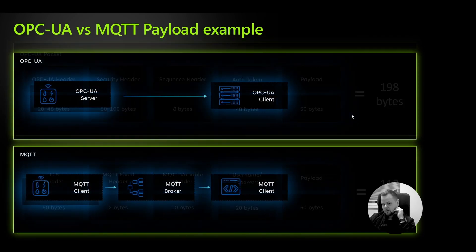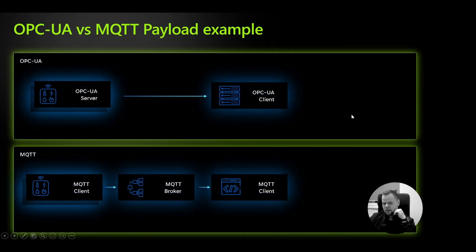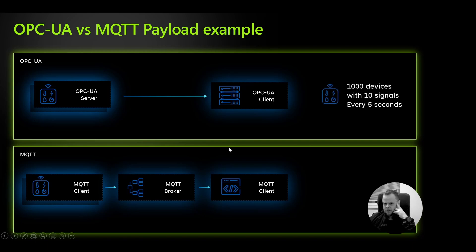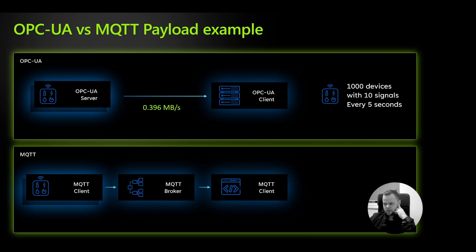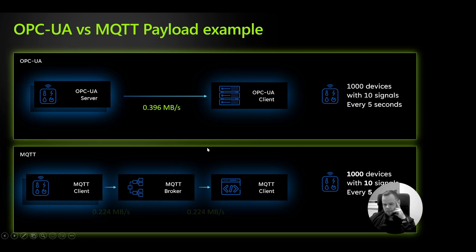Let's see what happens at scale, because MQTT promises to be very lightweight while OPC UA supposedly blows up the network — but I always wondered what that actually means. If we imagine 1000 devices with 10 signals each emitting a value every five seconds, it produces 396 megabytes of data per second. That's a lot for the network, but in a real network it would be split across subnets with VLANs and similar infrastructure.